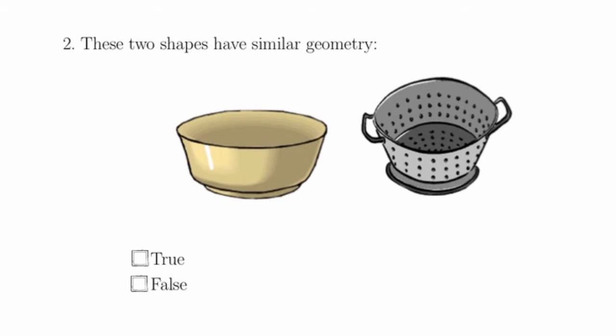For question 2, these two shapes have similar geometry, and this is true, they're both bowls. Essentially they have the same shape that we would see visually. Geometry doesn't care how many holes are in an object, so the fact that this colander is full of holes is not important to geometry, but the fact that they have the same visual appearance or the same geometry is what's important, so this question is true.